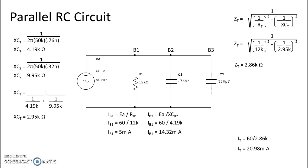Finally for branch three, we do the same process: voltage divided by the ohmic value. So we take 60 divided by 9.95k and we get a current of 6.03 milliamps.